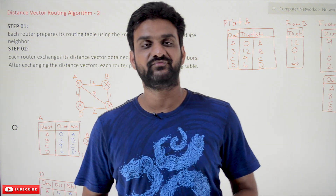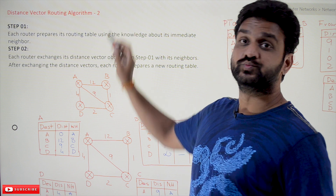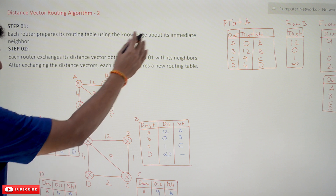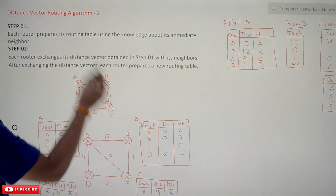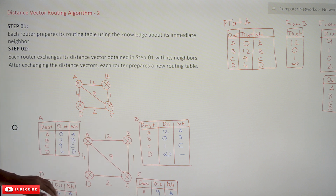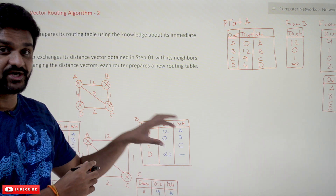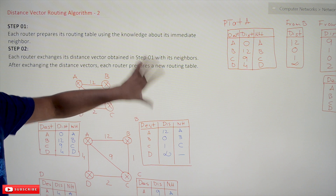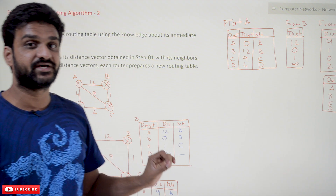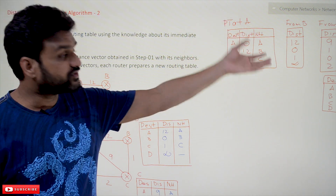Hi, welcome to Learning Monkey. I am Vikram. In this class we'll try to understand distance vector routing algorithm Part 2. The first part has already been explained in our previous video, where we took an example, considered the first step of distance vector routing, and obtained these routing tables for the corresponding routers. If you haven't watched that video, please watch it first, because without understanding that, you may not be able to follow this video.